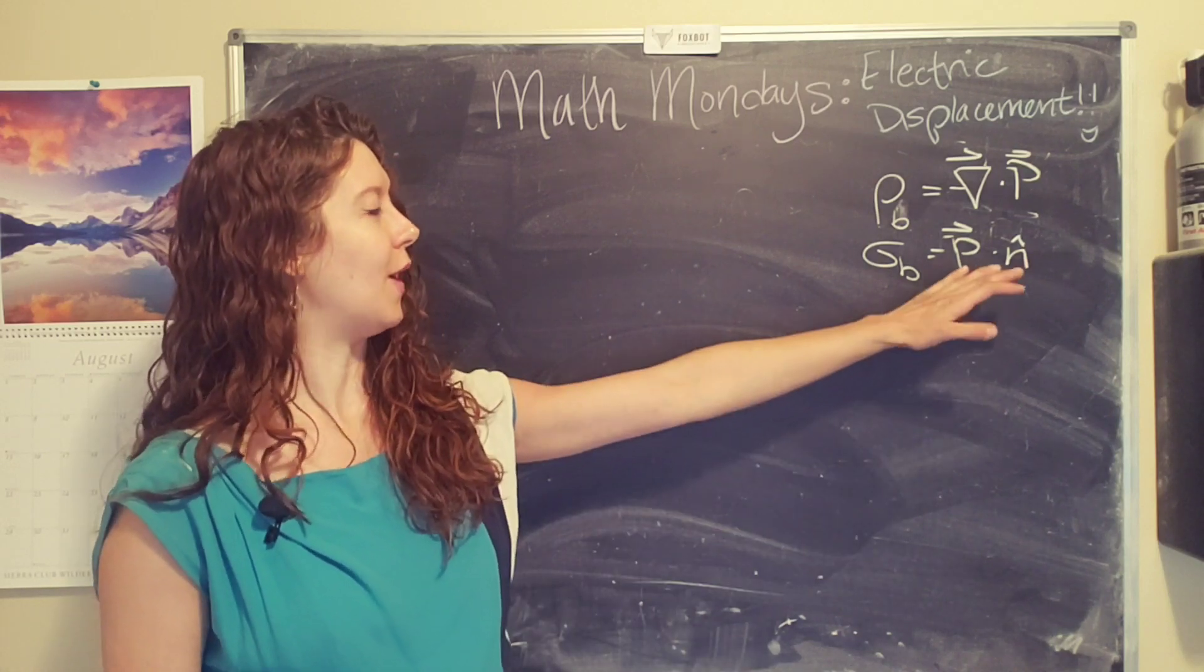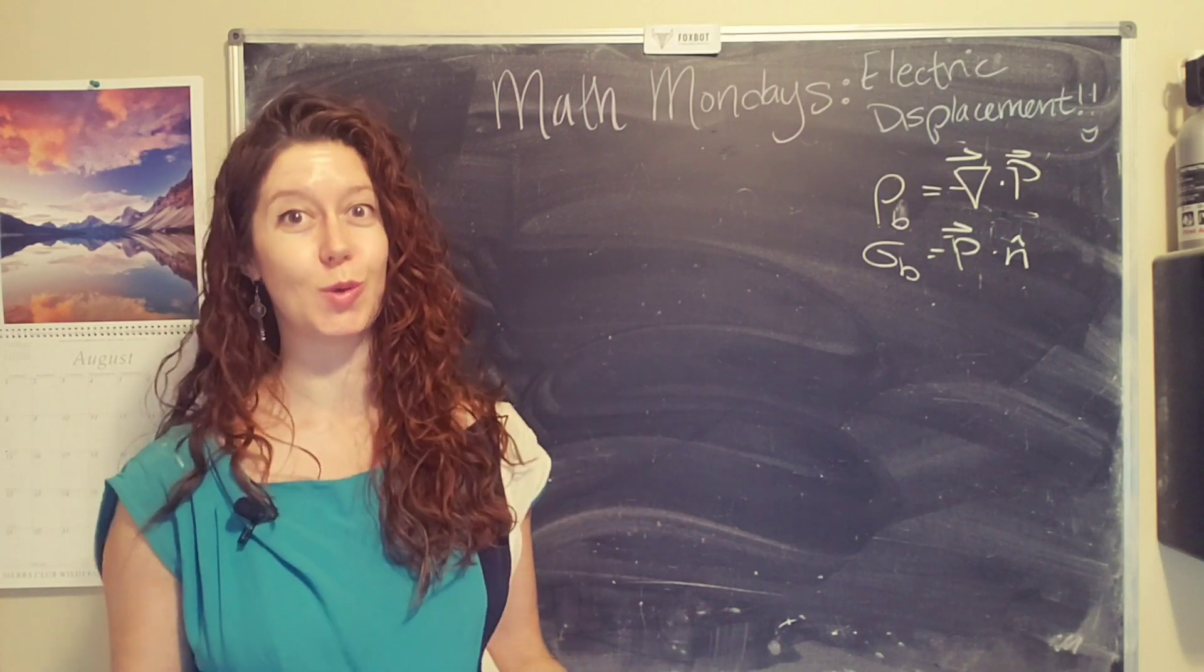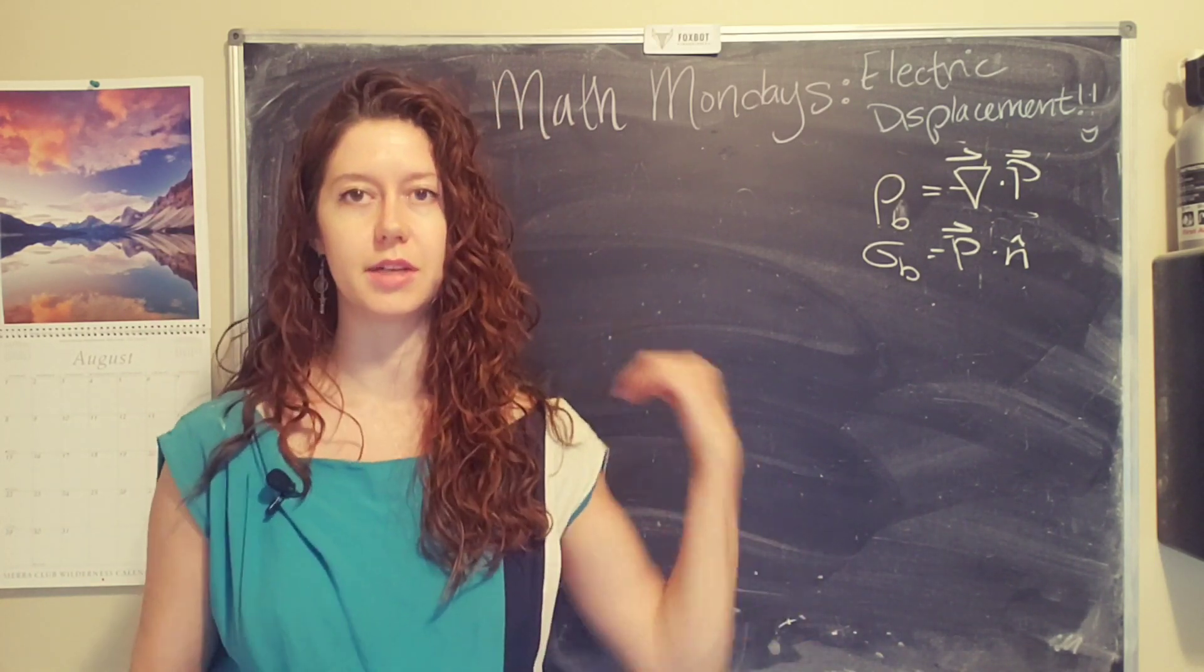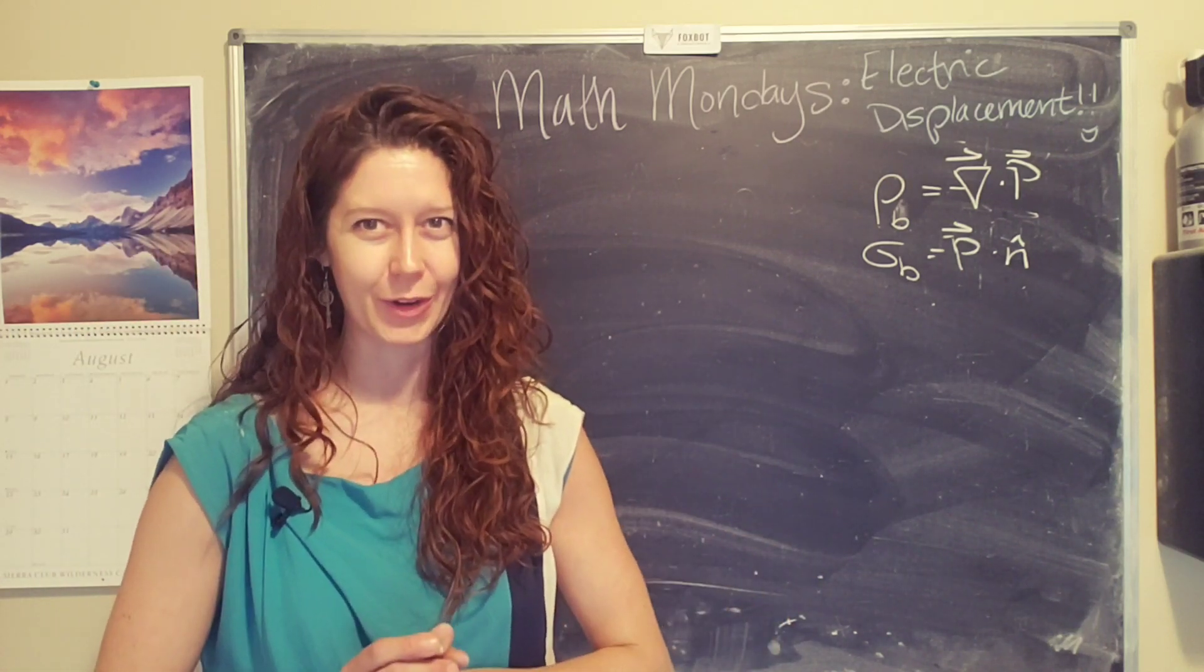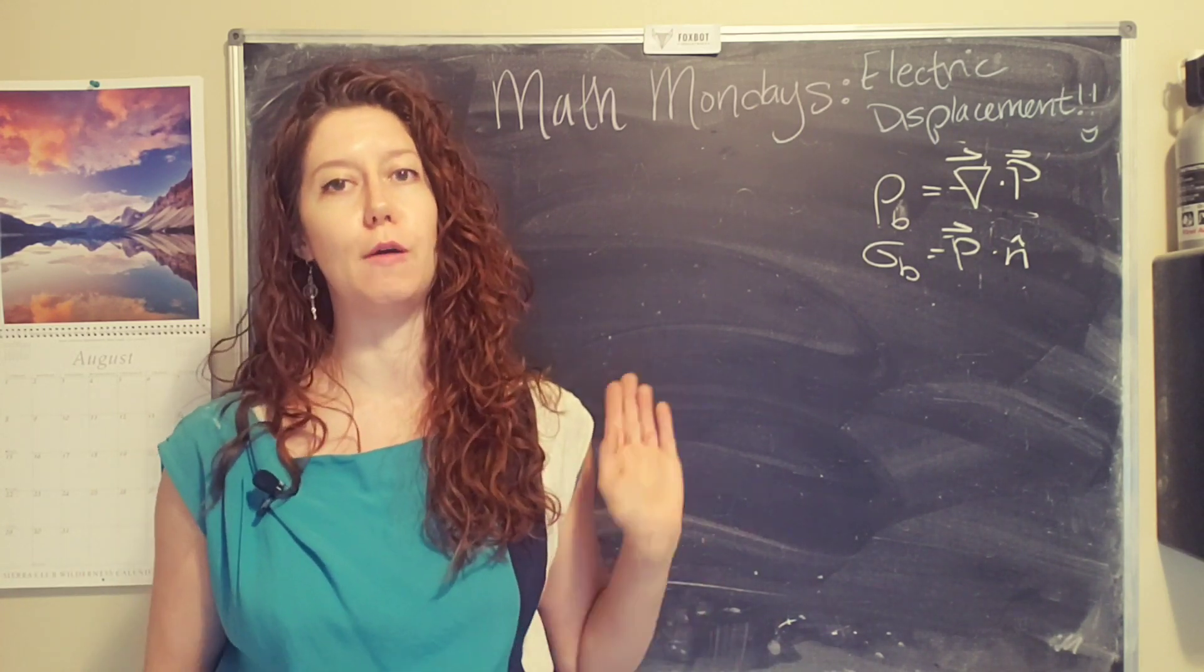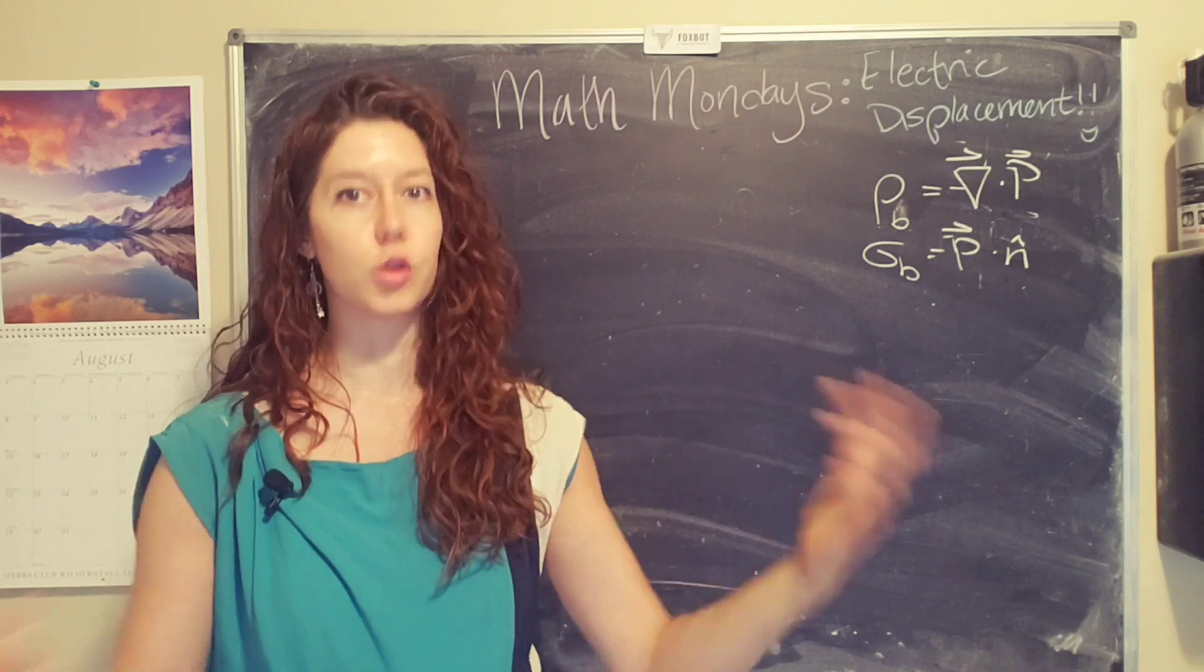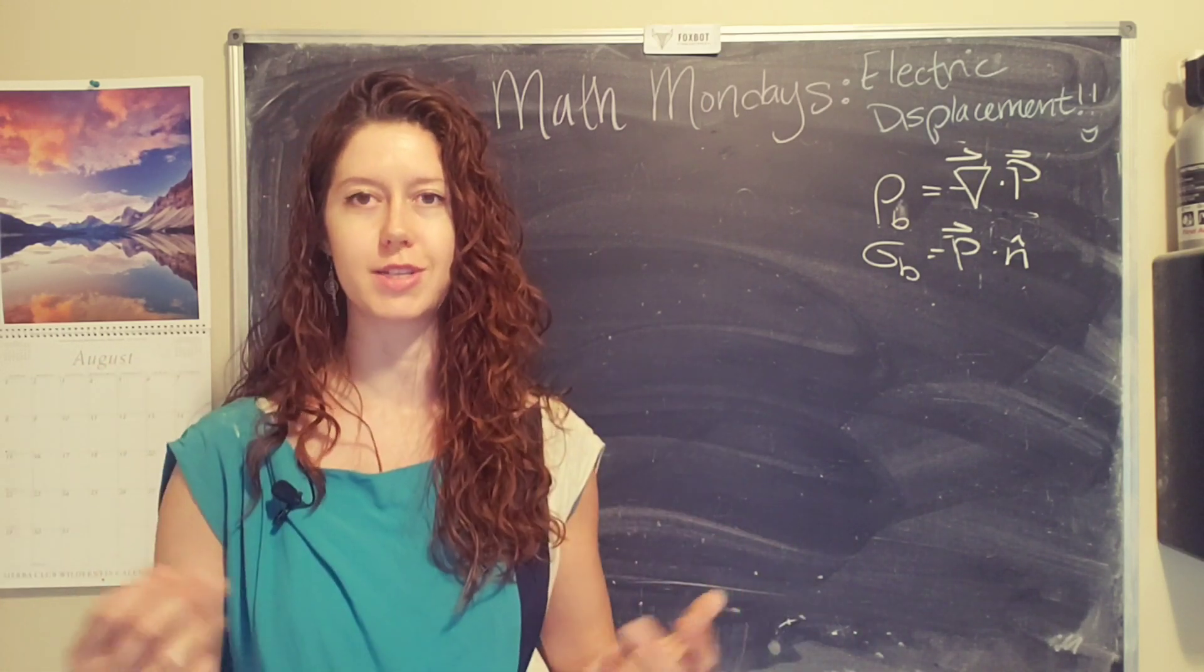So these bound charges also result in an electric field, because when you have charges that separate, there is a force between them, and that also causes an electric field. So now we can start to put the whole shebang together and ask, okay, well, what is the total result of applying an electric field to this material? How does this polarization affect the other charges in the area?